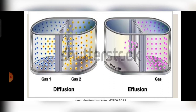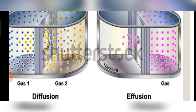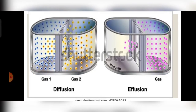In diffusion, molecules mix spontaneously from higher concentration to lower concentration. As shown in the diagram, gas one is mixing with gas two and gas two is mixing with gas one. The second property is effusion — effusion means molecules move from higher concentration to lower concentration through a hole into an evacuated or empty part of the container. In diffusion, gas one and gas two molecules intermix randomly with each other.